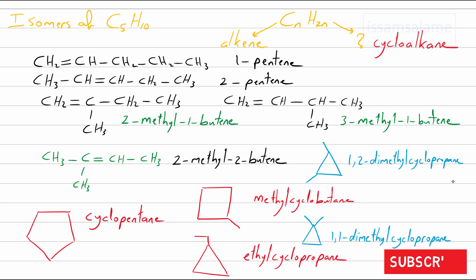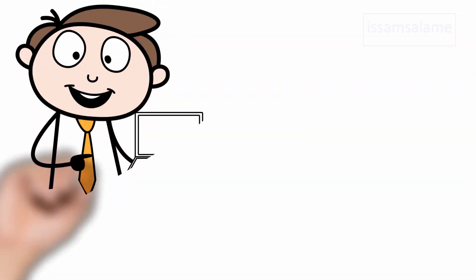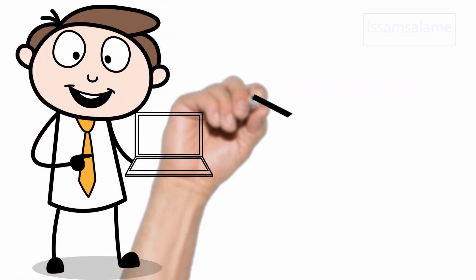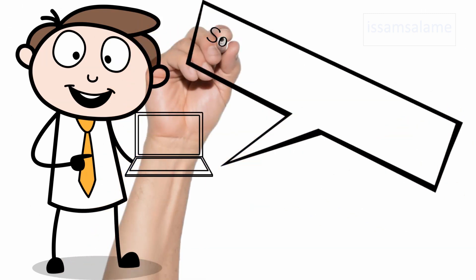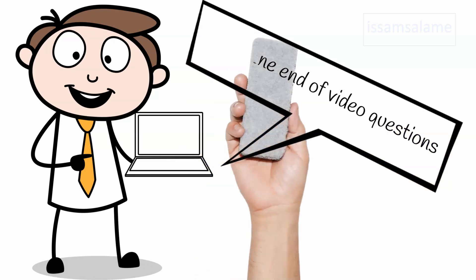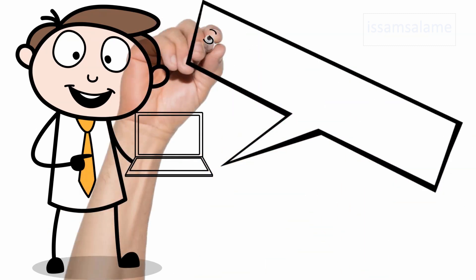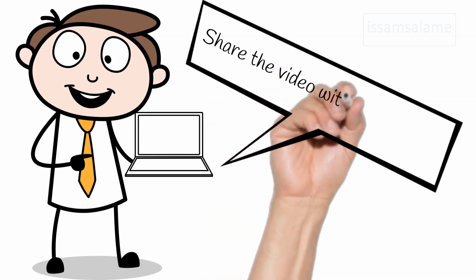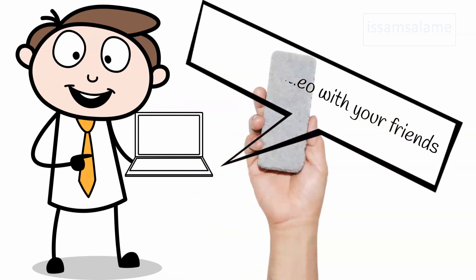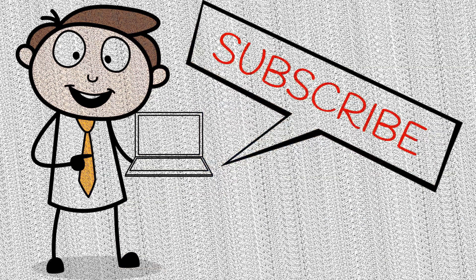I think those are all the possible isomers for C5H10. If you could find more, please write me a comment. I hope you liked this video; now you are ready to solve the end-of-video questions. If you are not ready, please repeat the video, otherwise put your answers in the comment section. If you have any questions not covered in the video, share them with me in the comments. Share this video with your friends, subscribe to my channel to stay tuned for more videos — see you in other videos and good luck!